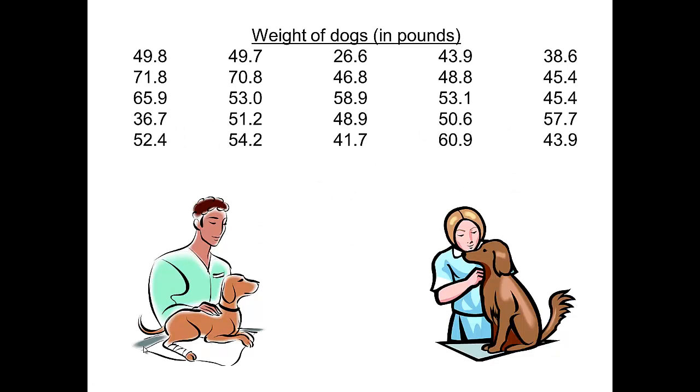We're looking at the weight of 25 dogs. We have the list of the data points. Notice that all the data is rounded to one place after the decimal.